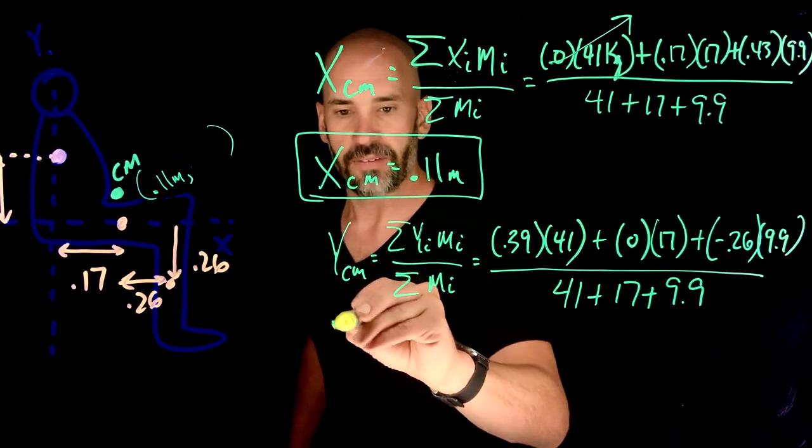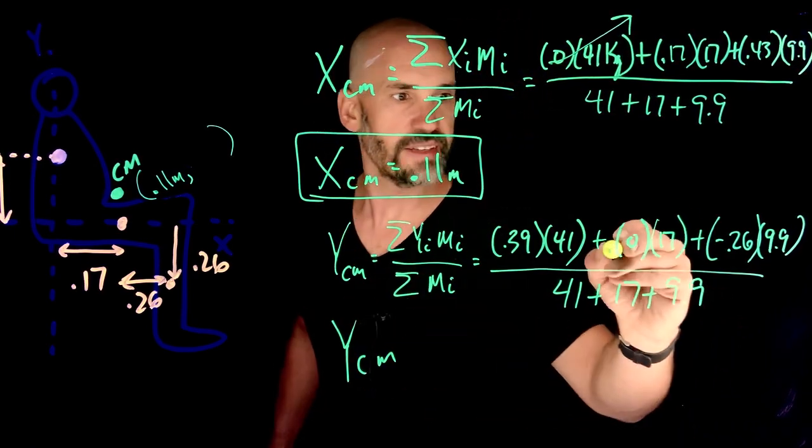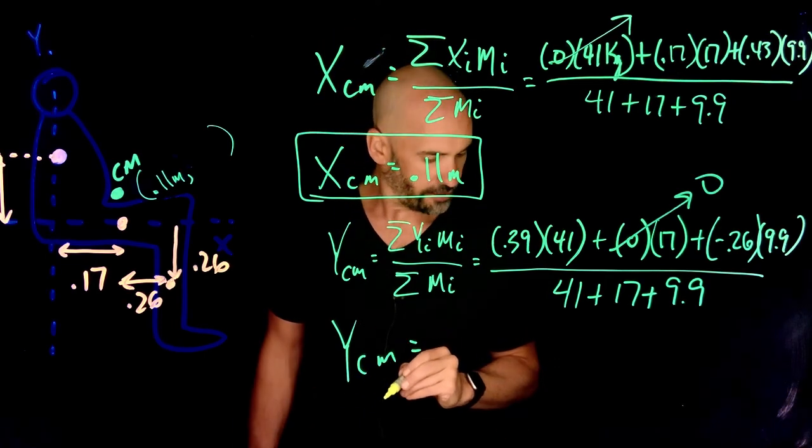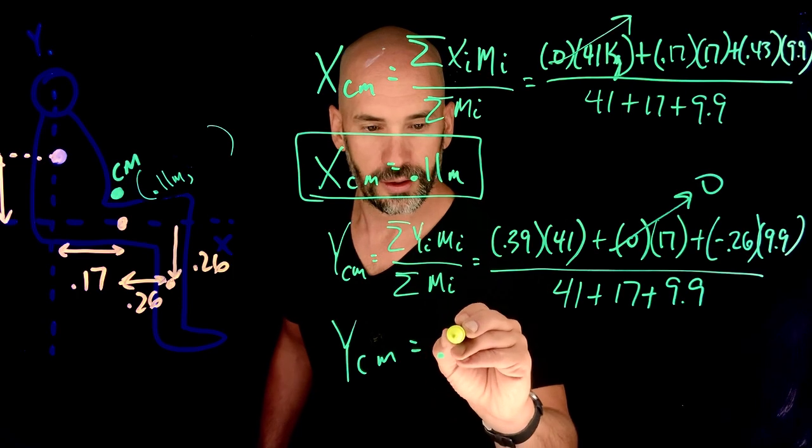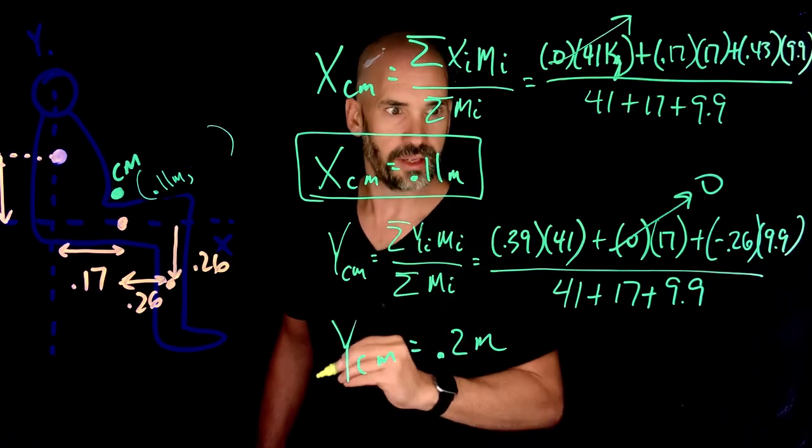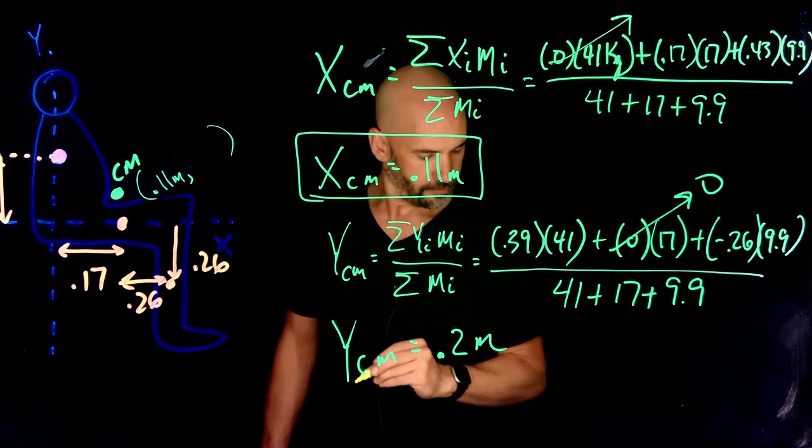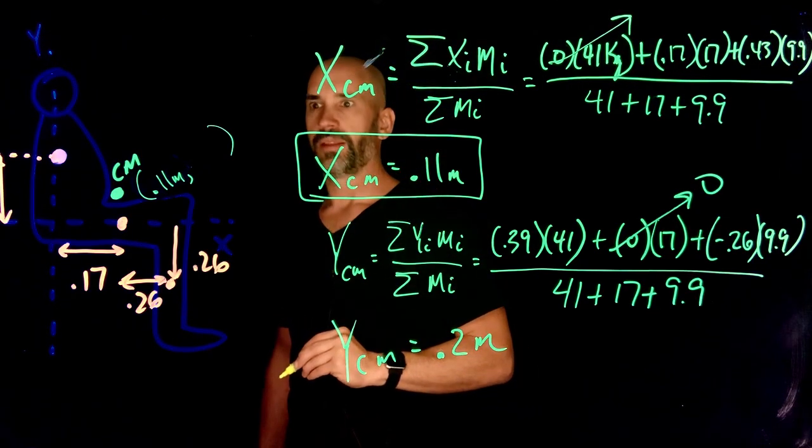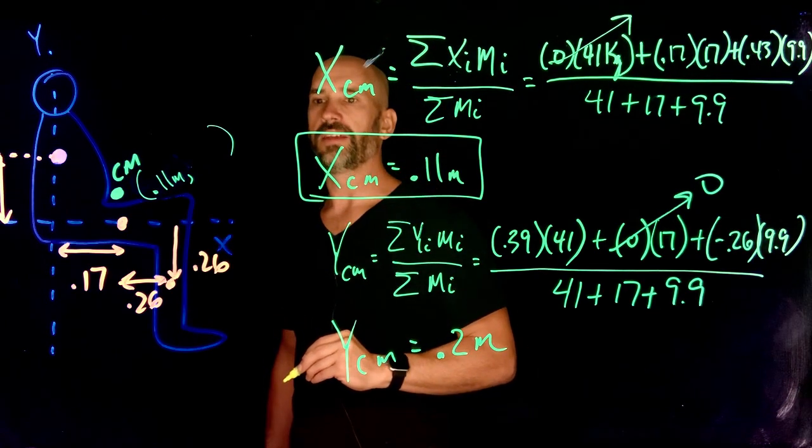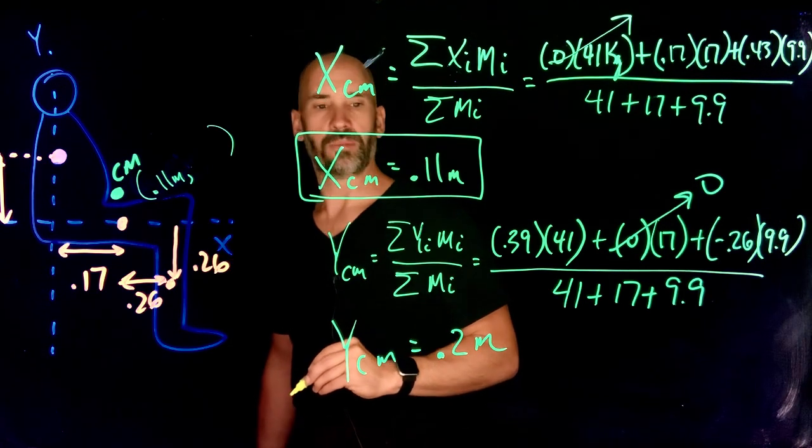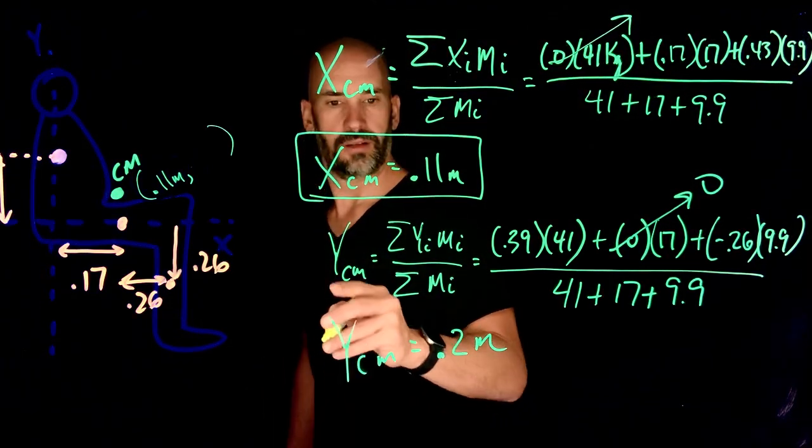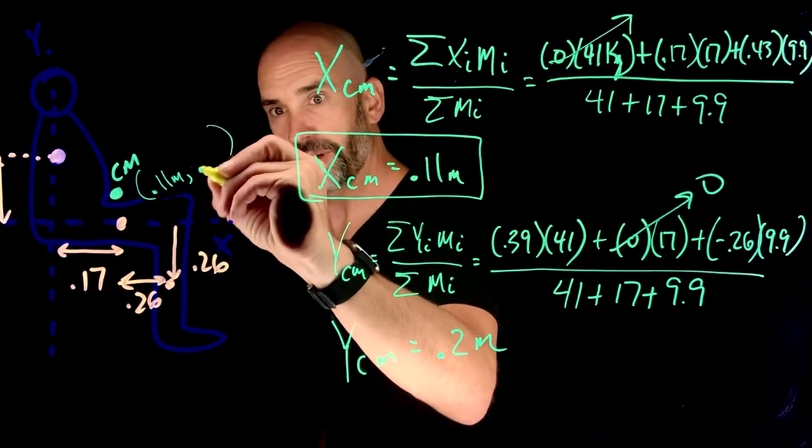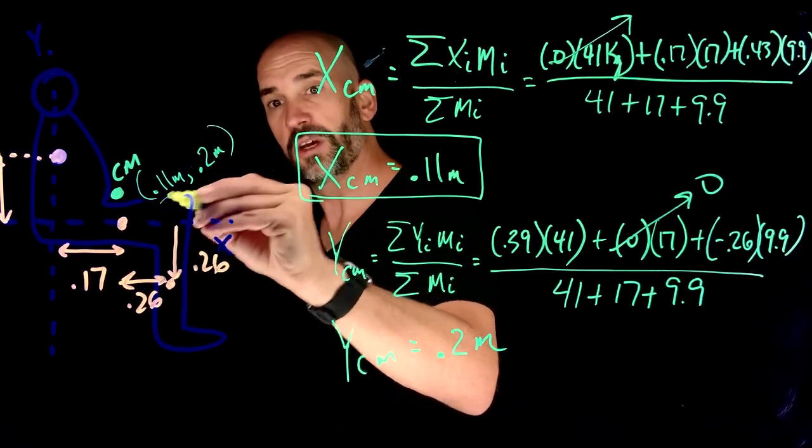If I put all that in my calculator, set that equal to zero, I get a value of 0.2 meters. So what does that mean? That means that the y component of my center of mass is going to be 0.2 meters. Let me know if you get the same values. And hopefully you do.